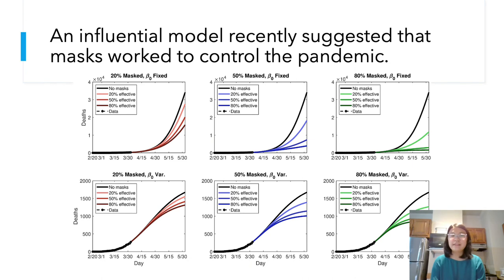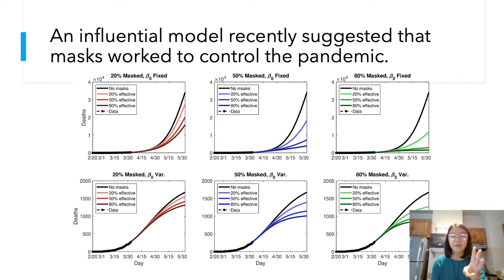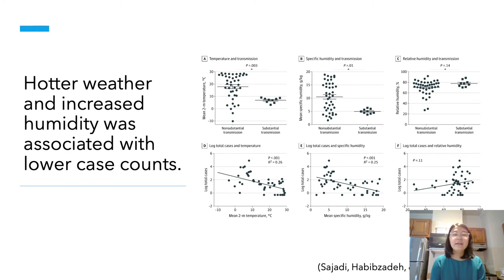An influential model recently suggested that masks worked to control the pandemic. They ran several simulations, including scenarios with 20%, 50%, and 80% of people wearing masks. They found that at 80% — meaning that 80% of transmission was blocked — the curve was almost completely flattened. In addition, another factor which might control the spread of coronavirus is temperature. Hotter weather and increased humidity were associated with lower case counts, perhaps suggesting that coronavirus could eventually become a seasonal disease rather than a worldwide pandemic.